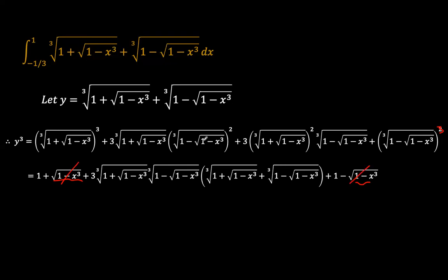And then here we can now pull out 3 and also the product of the first and the second term here. So what you're left with is the sum of the first and the second term, which means that this component is just y. So we have 2 plus 3 times the first and the second term times y.